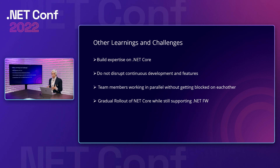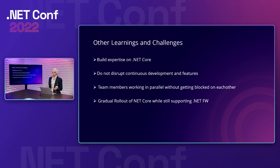There was a challenge in having multiple people work on the .NET Core migration at the same time without blocking each other, since many components are interdependent. We had to plan which components to migrate first to ensure everyone stayed productive. For the gradual rollout, since these services run billions of requests daily, we support both .NET Core and .NET Framework in the same image so we can switch back to .NET Framework in case of failures, while monitoring metrics daily.